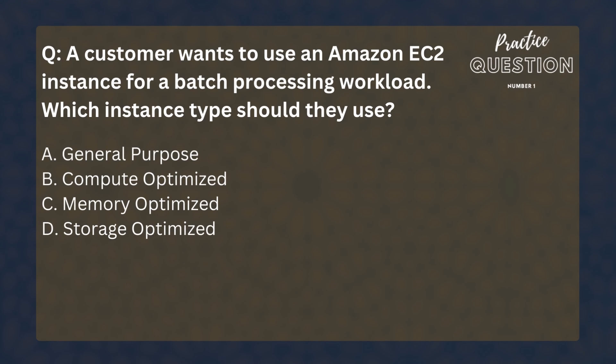A customer wants to use an Amazon EC2 instance for a batch processing workload. Which instance type should they use? General Purpose, Compute Optimized, Memory Optimized, or Storage Optimized? It is going to be Compute Optimized. Remember, batch processing workloads are a typical example of workloads that need a compute optimized instance.